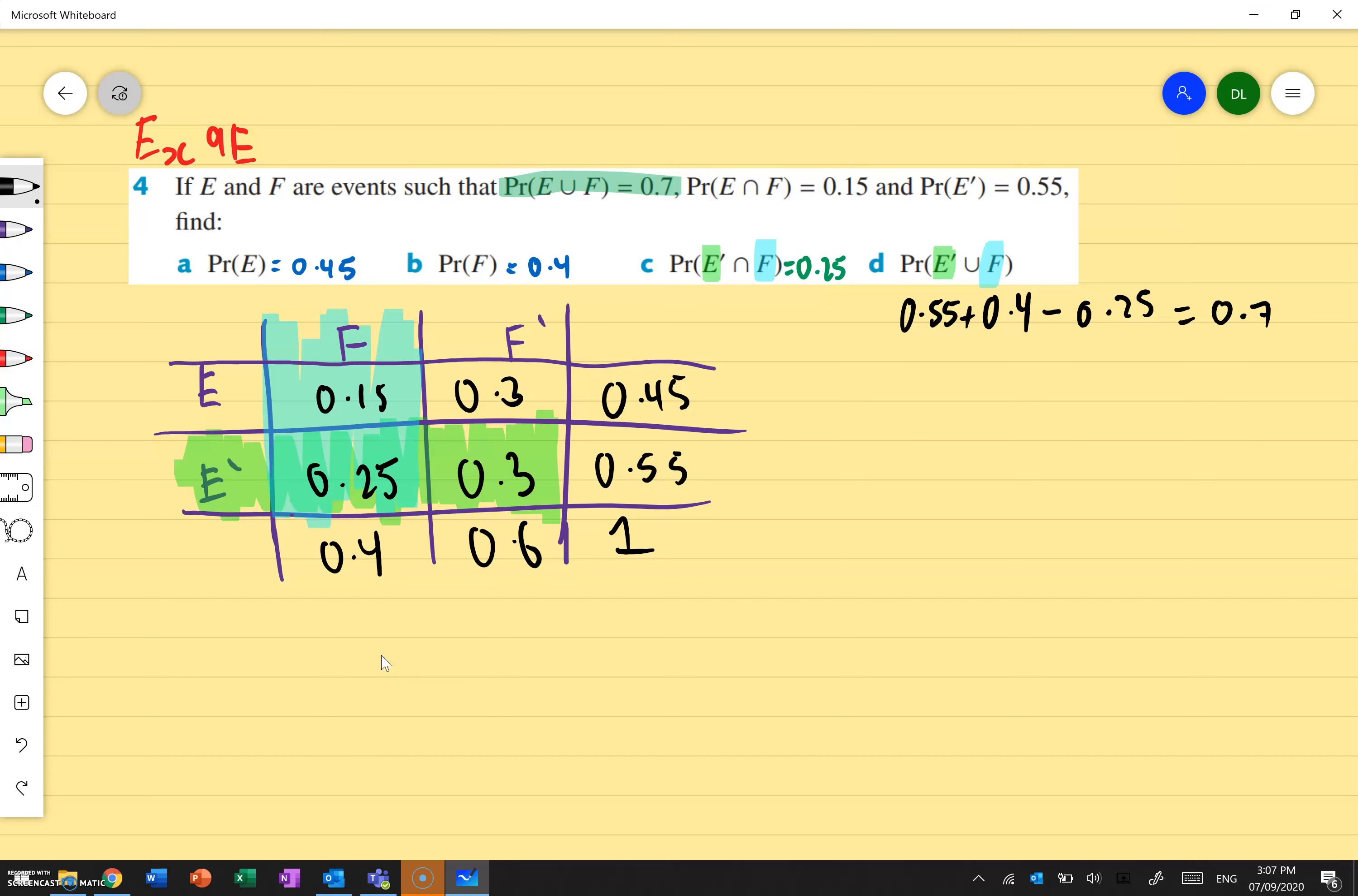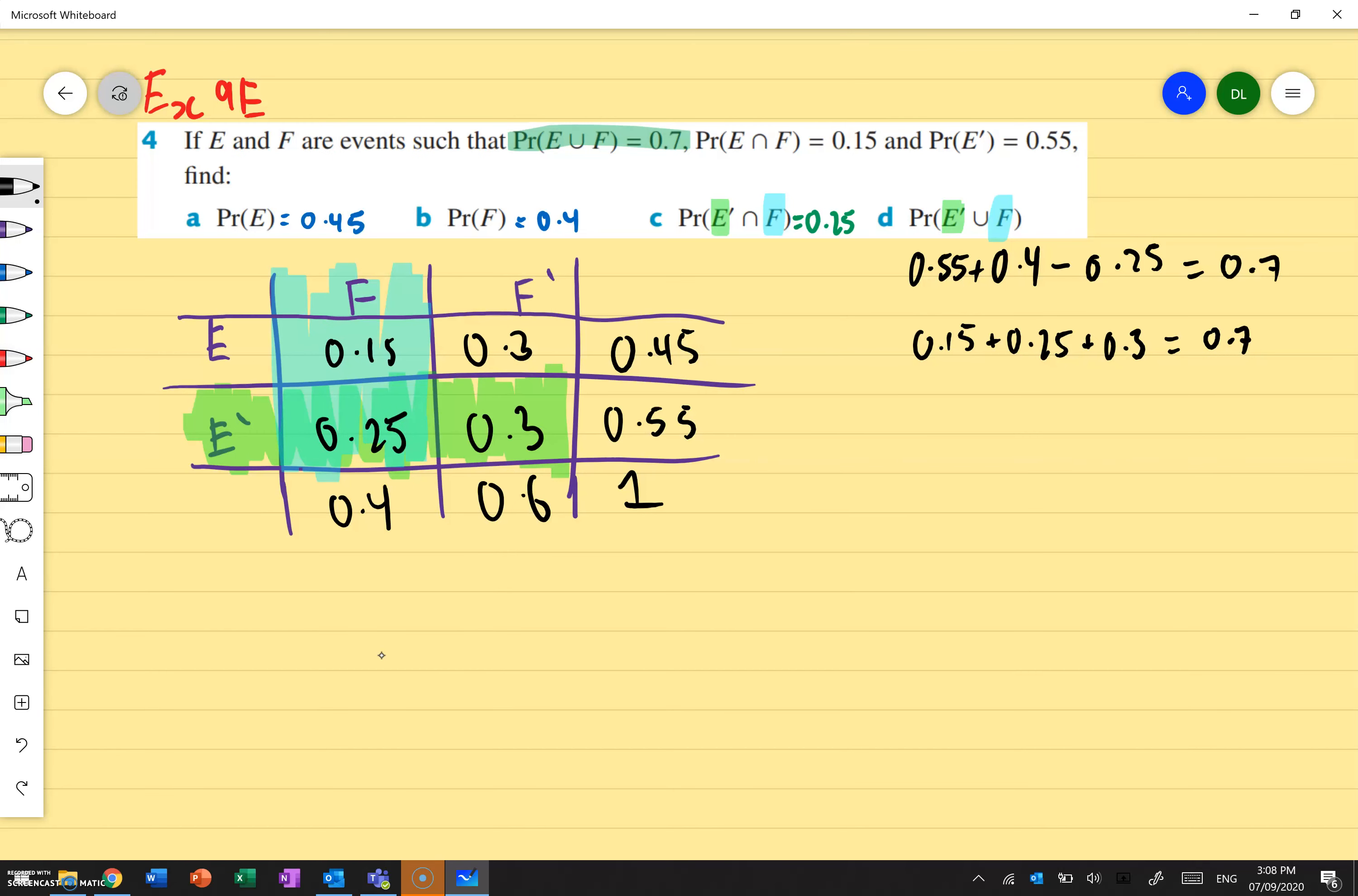Now there's another way we can do it. Instead of looking at where they overlap, let's just look at what numbers are inside. So I'm going to add all these values up. So 0.15 plus 0.25 plus 0.3. And that's from these values inside that box. Once again, that adds up to 0.7.